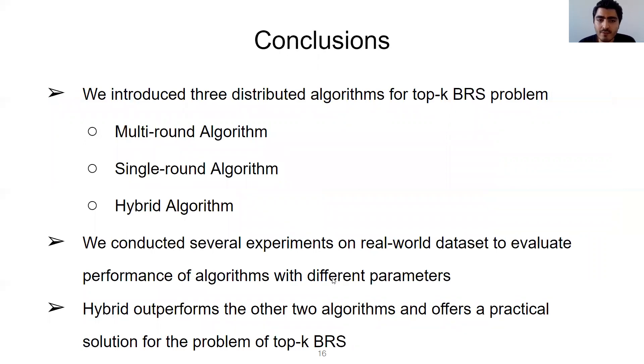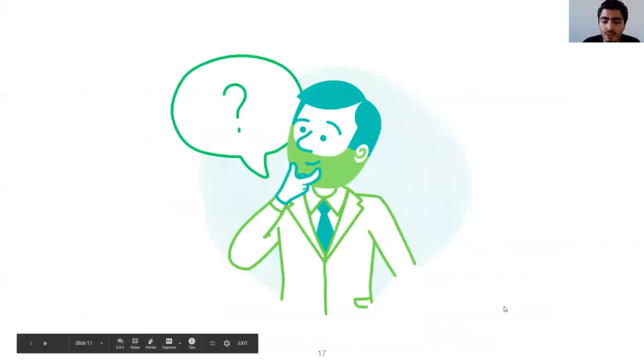In conclusion, we have introduced three distributed algorithms for the top-k BRS problem, and we have conducted several experiments on real-world datasets to evaluate the performance of the algorithms. Based on our experiments, we find that the hybrid outperforms the other two algorithms and offers a practical solution for the BRS problem. And here I am to answer your questions.